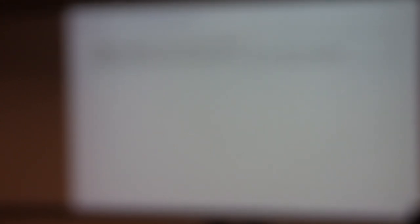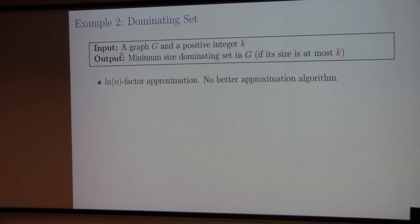Let's move on to the next question: dominating set. Given a graph G, we know the decision version asks whether there is a dominating set of size k. In the optimization version, we output a minimum-size dominating set if it has size at most k. This problem has a log n factor approximation algorithm and no better factor is known.